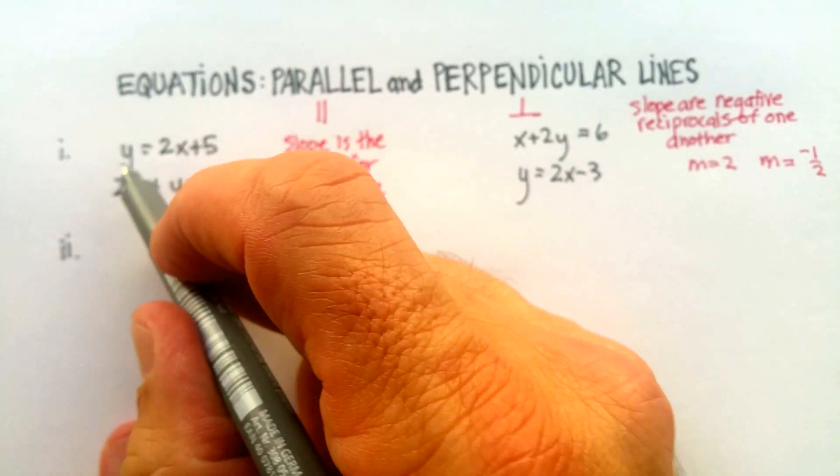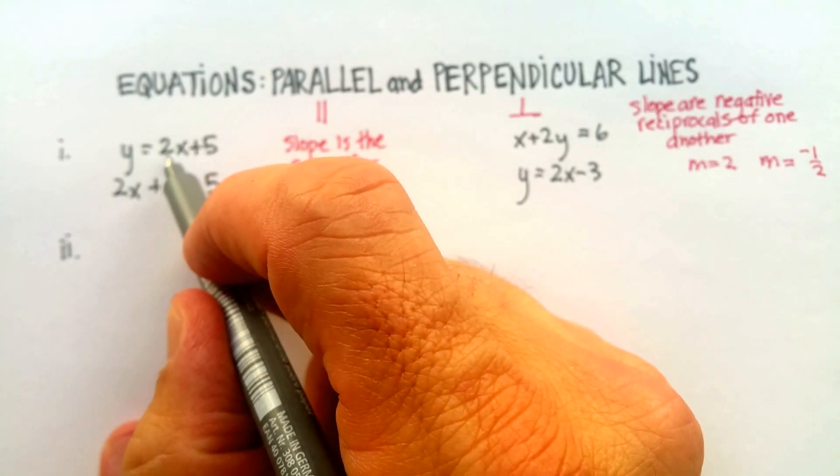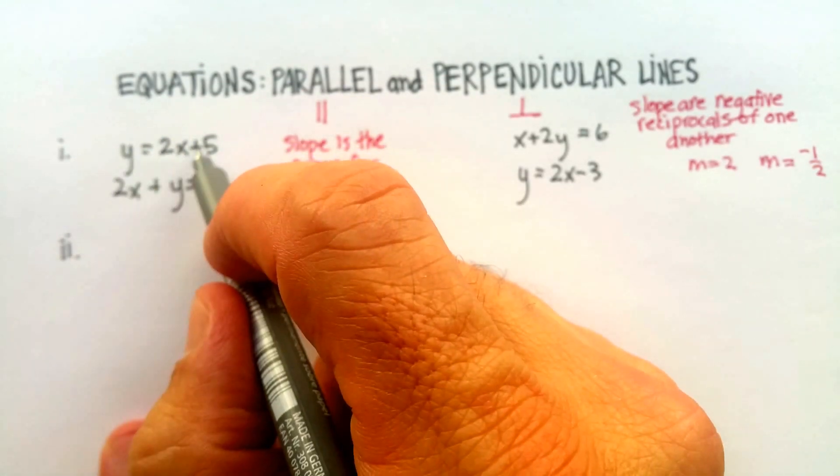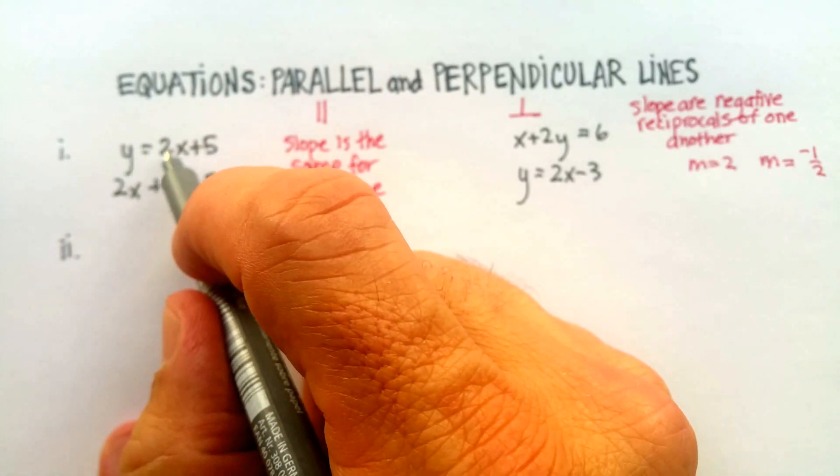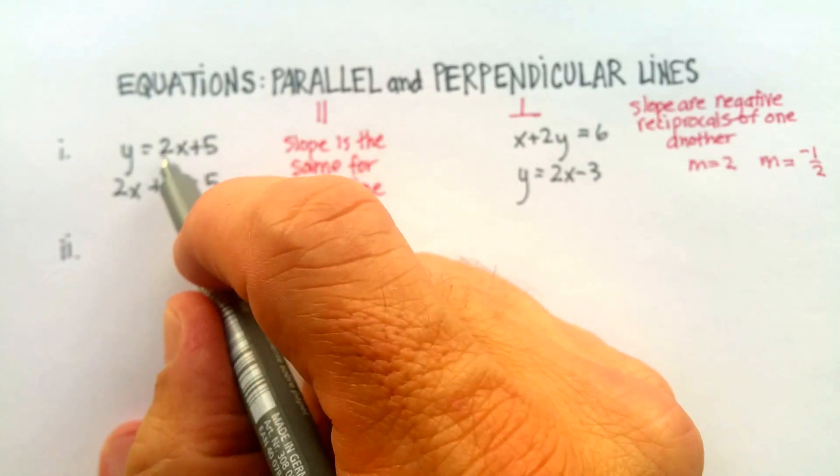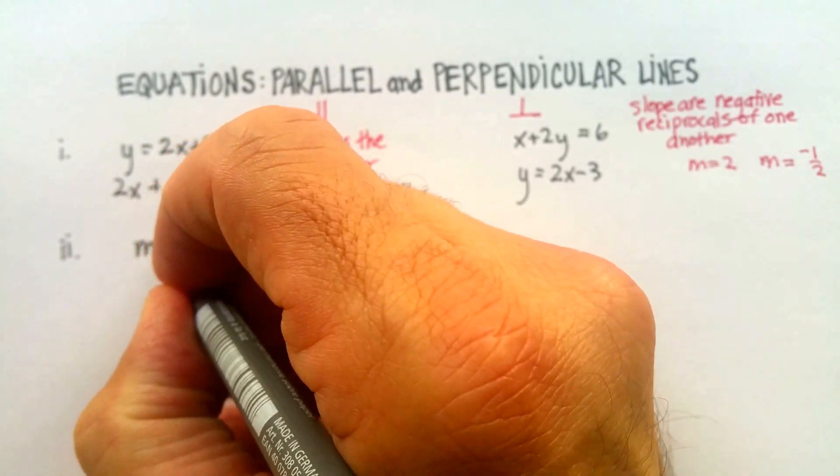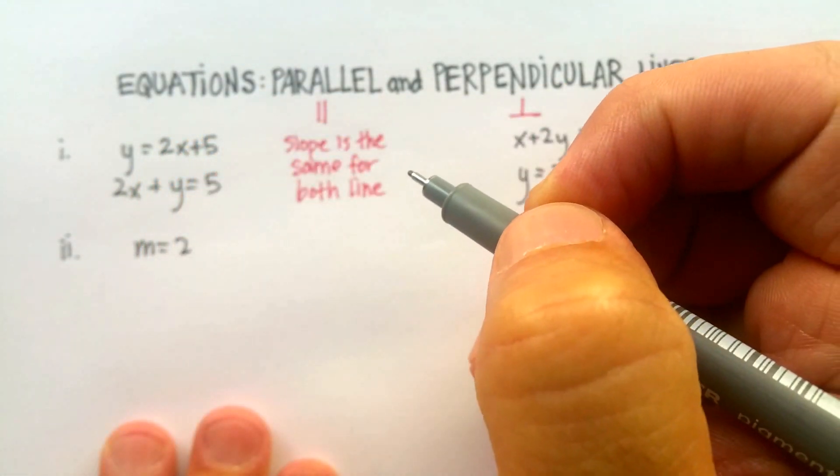So again, we know that if we can look at the slope. In this top one, the slope for this equation is just 2 because this equation is in the form of slope intercept. Y is equal to mx plus b. The m here in number one would be a slope of 2.